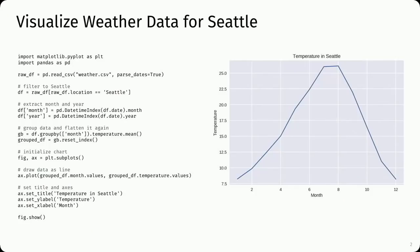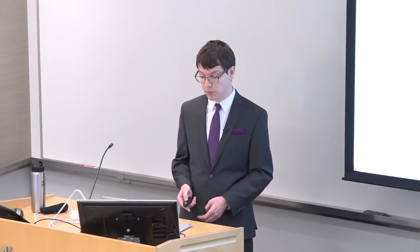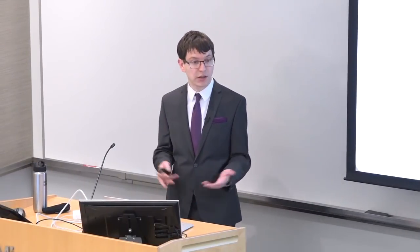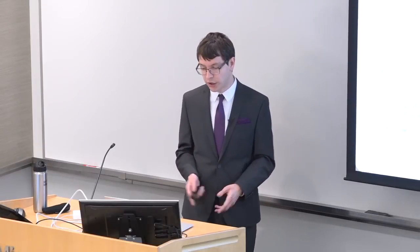This is how a prototypical data scientist would make a chart — let's say for a presentation on weather in Seattle throughout the year. First, they would start by importing libraries such as Matplotlib, then read in the dataset, filter to only Seattle, extract the month and year from the data, aggregate and flatten it again, initialize the chart, draw the line, set up the title and axes, and finally show the chart.